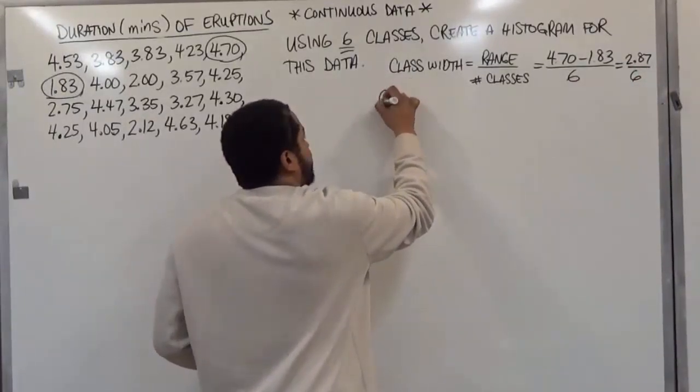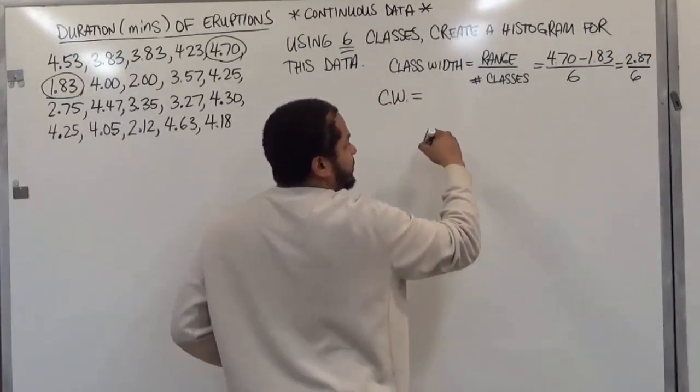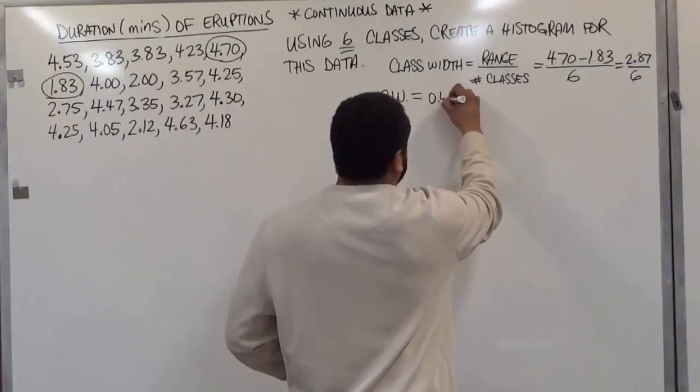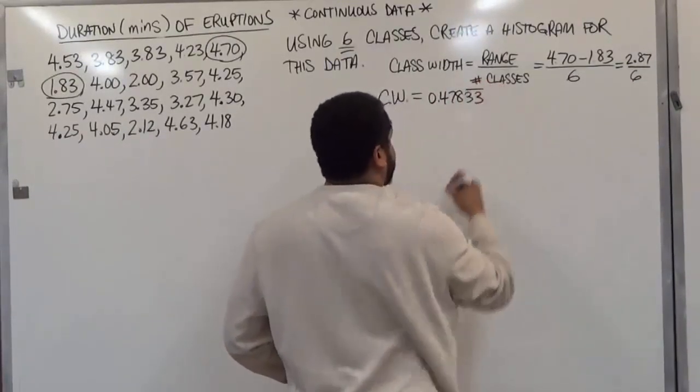Again, I'm going to abbreviate the class width with just CW. And the CW here in this case is 2.87 divided by 6 which gives us a decimal number which is going to be 0.478. And the 3's just begin repeating here in this case.